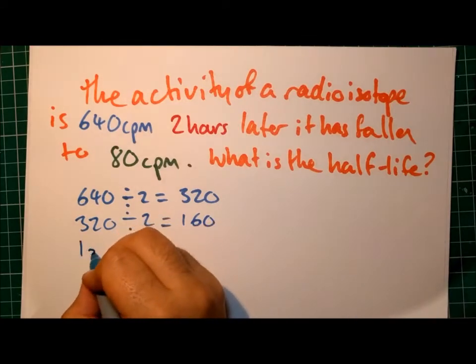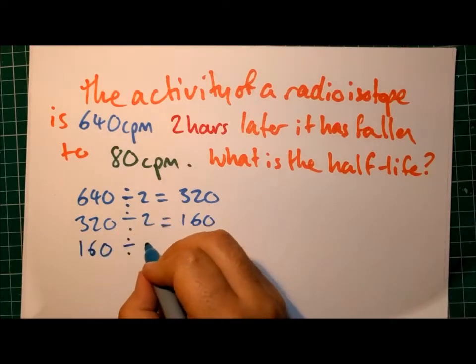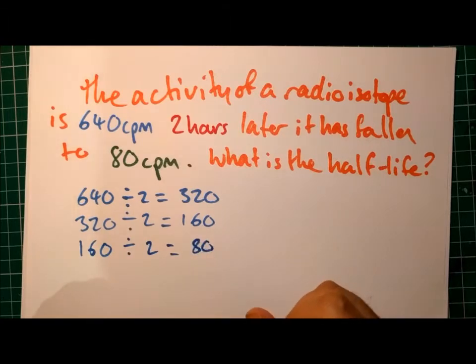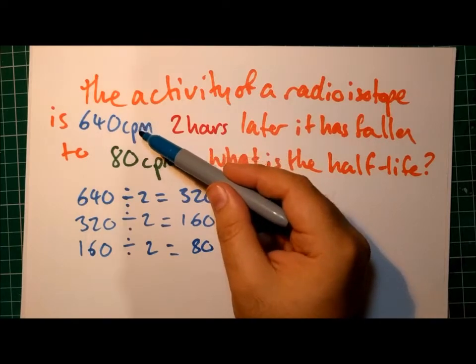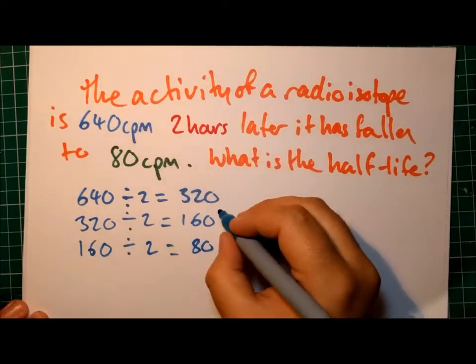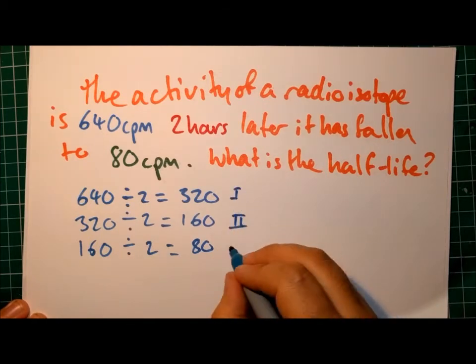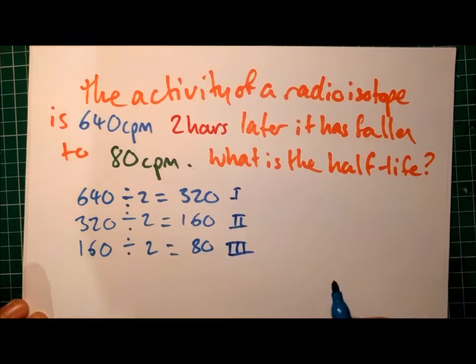After another half-life, that count rate of 160 will have divided by 2, and we'll have a count rate of 80. So how many half-lives does it take to get from 640 counts per minute to 80 counts per minute? Well, that's 1, 2, 3. So we know that 2 hours was 3 half-lives.